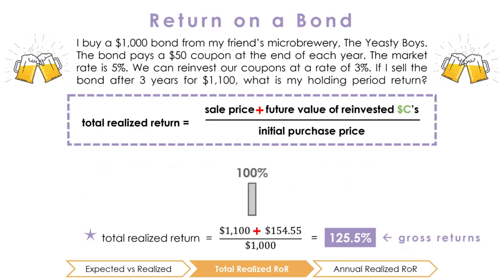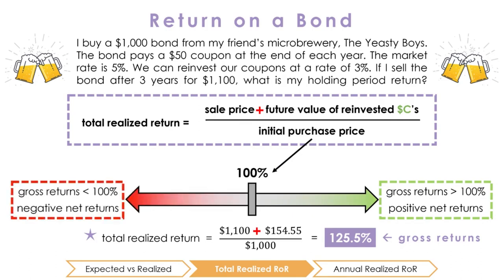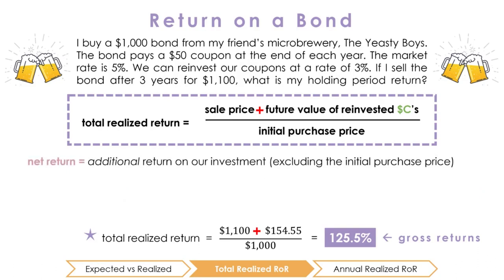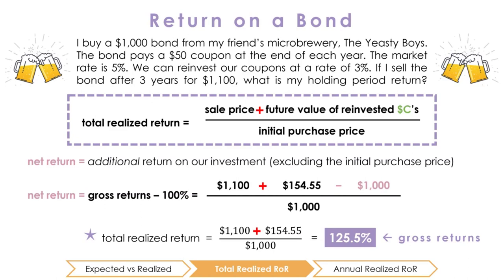Note that this formula tells us our gross returns. Gross returns include 100% for the initial value of our investment. Anything over 100% means we earned a positive return; anything under 100% means we lost money; and a gross return of exactly 100% means we exactly broke even — we didn't lose money, but we also didn't make money. To determine our net return on the investment, which is the additional amount we earn on our capital, we simply subtract 100% from our gross returns. In this case, that's ($1,100 + $154.55 − $1,000) / $1,000, and our investment grew by 25.5%.